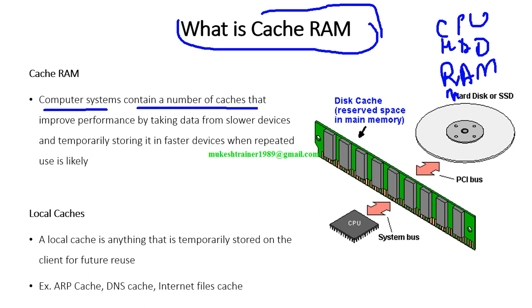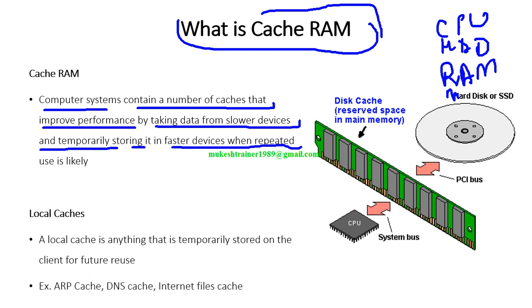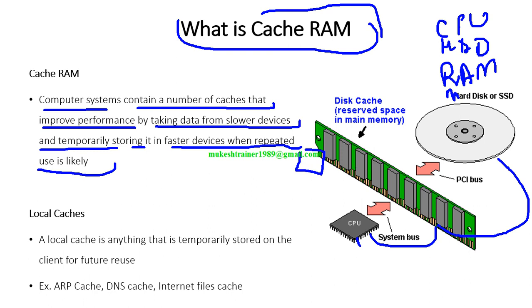A computer system contains a number of caches that improve performance by taking data from slower devices and temporarily storing it in faster devices. For example, this is the CPU going to RAM, and RAM going to the hard drive. If you are frequently browsing or viewing a file again and again, the cache RAM will hold that particular data so that if the CPU needs it again, it will not go to the hard drive — it will simply give it to you directly.